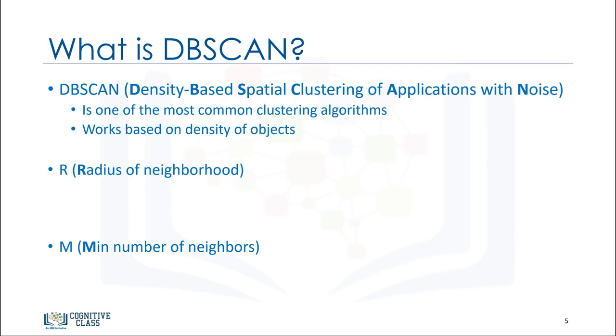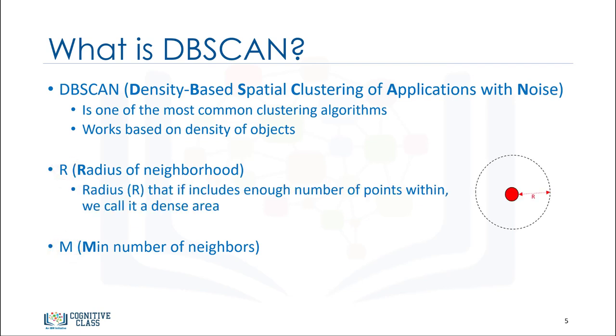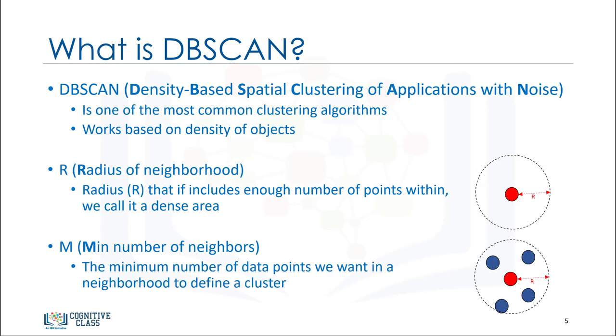It works based on two parameters: radius and minimum points. R determines a specified radius that, if it includes enough points within it, we call it a dense area. M determines the minimum number of data points we want in a neighborhood to define a cluster.